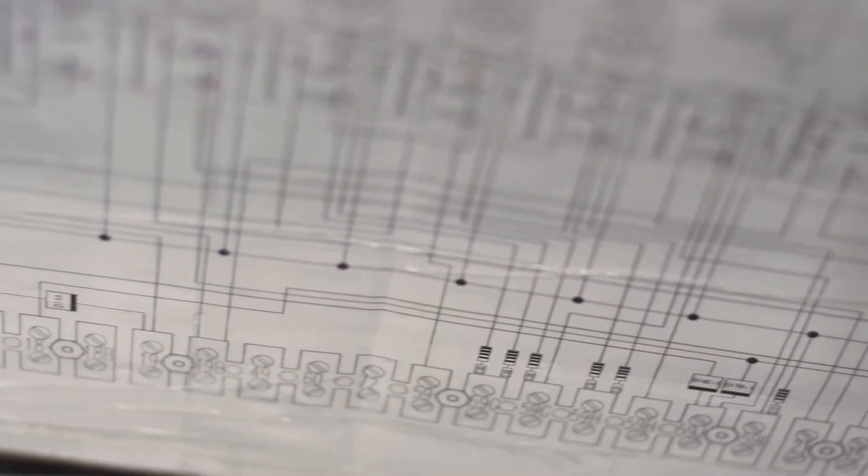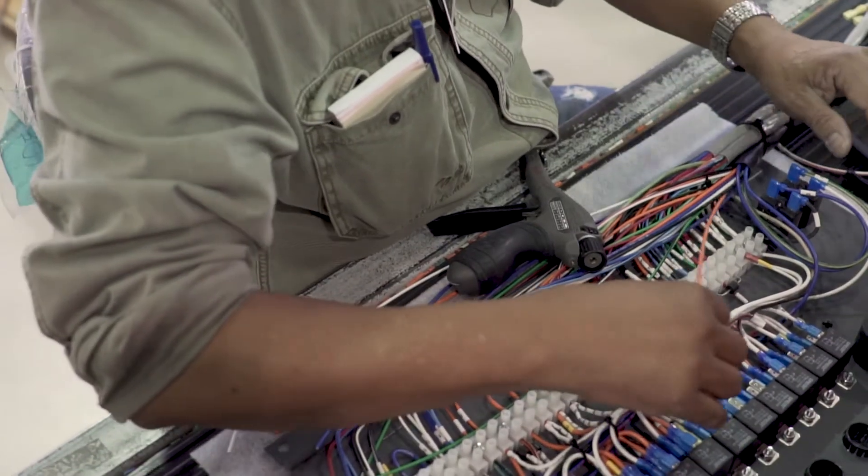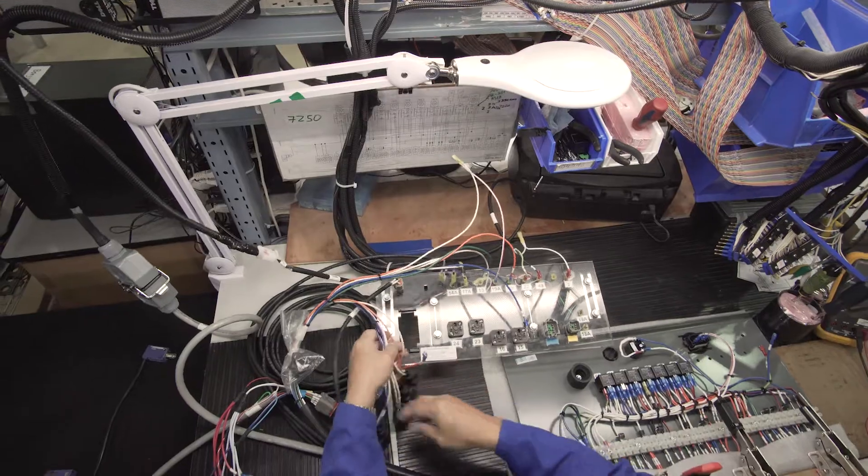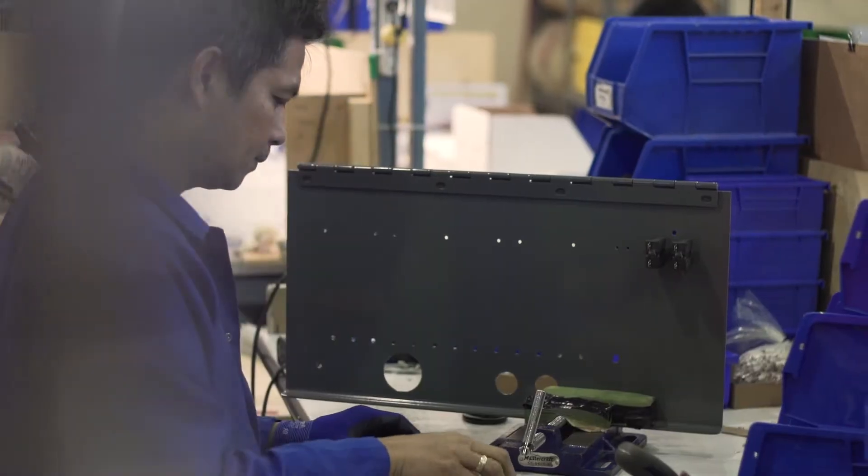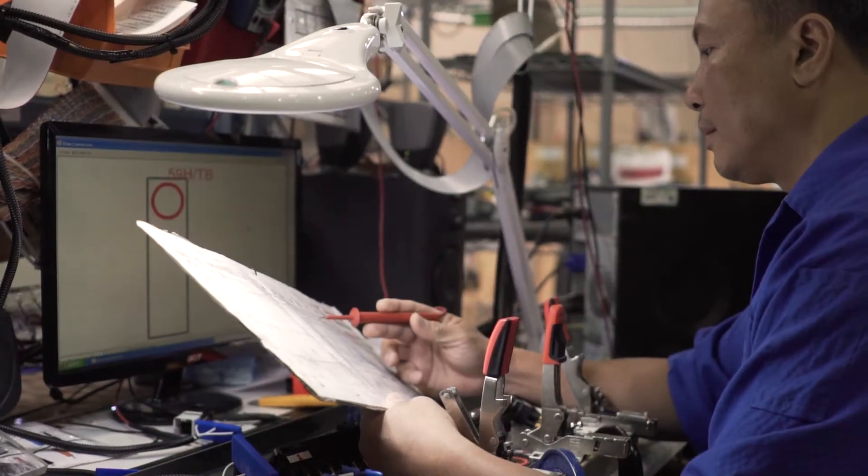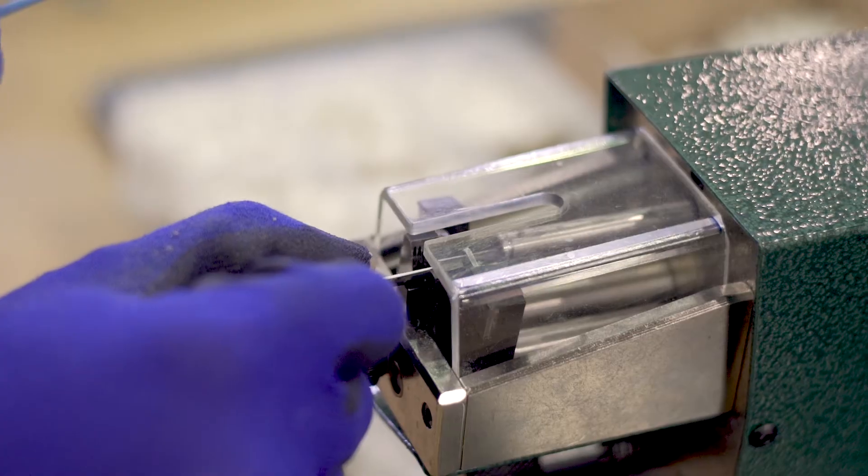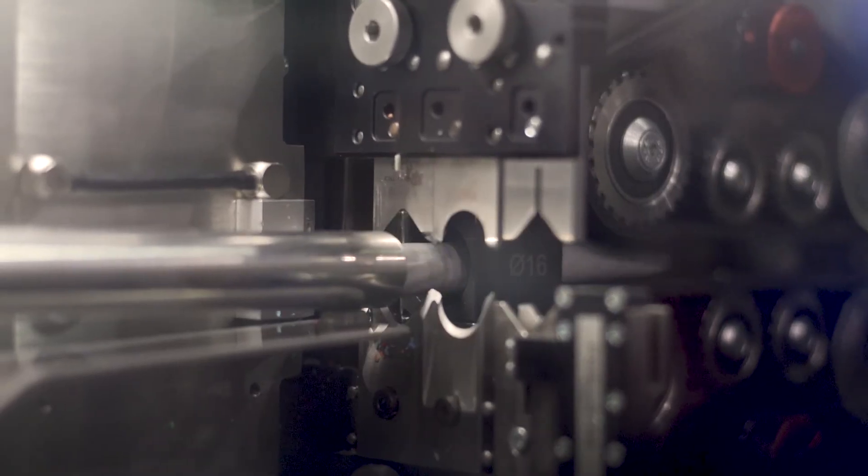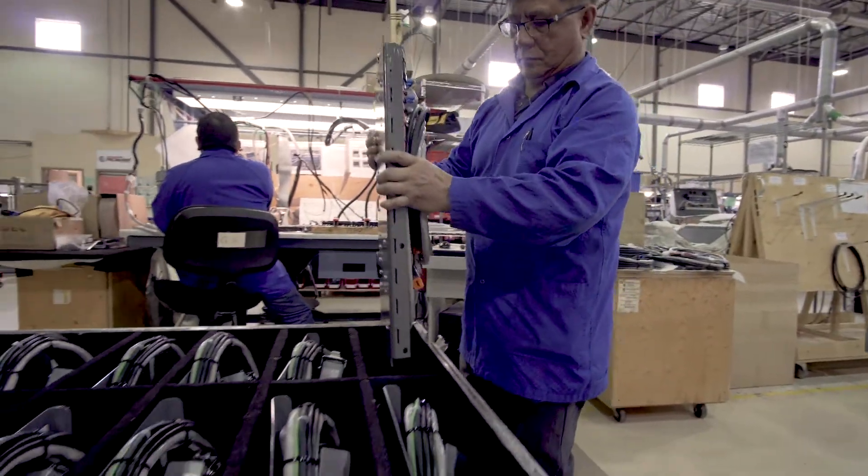This control panel takes anywhere between four to six hours to build one, and when you're building something that's on a continuous production program where you have to deliver 200 to 400 units on a weekly basis, it's very demanding in terms of production to ensure that your processes are robust and you can make those delivery schedules every week.